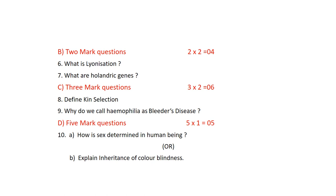Why is haemophilia called bleeder's disease? Haemophilia is called bleeder's disease due to delayed blood clotting. In a normal person, blood stops flowing within two to five minutes of a small wound. In haemophilia, it takes 20 minutes to 24 hours to arrest the blood flow — in the meantime, the entire blood volume can ooze out, leading to death. That is why it is called bleeder's disease.